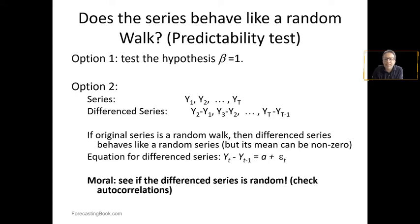Does the series behave like a random walk? Option one tests the hypothesis of beta equal to one. Option two is we have a differenced series and we try to test whether we have a series that behaves like a random walk.